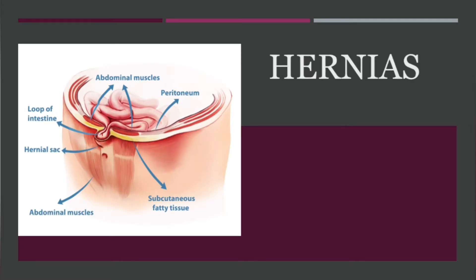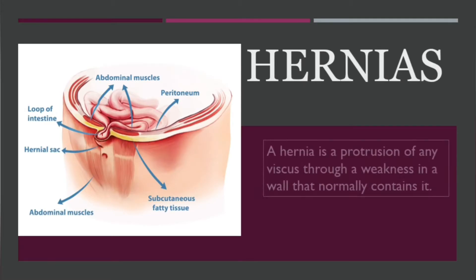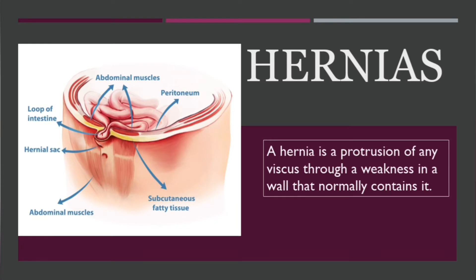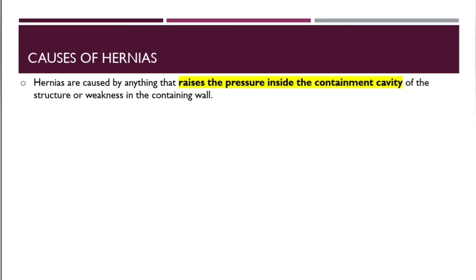Let's talk about hernias. A hernia is a protrusion of any viscus — an internal organ — through a weakness in a wall that normally contains it. Hernias are caused by anything that raises the pressure inside the containment cavity of the structure, or by weakness in the containing wall.